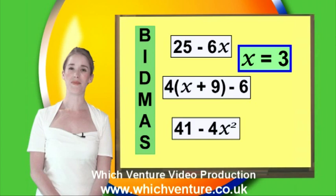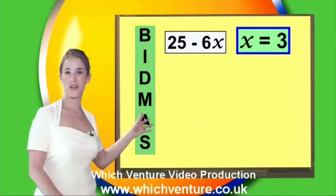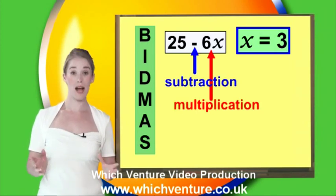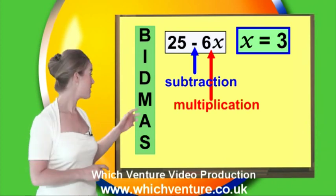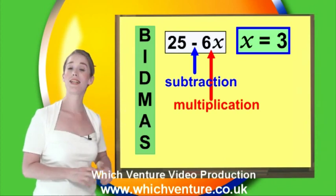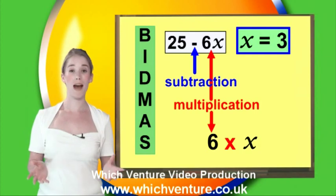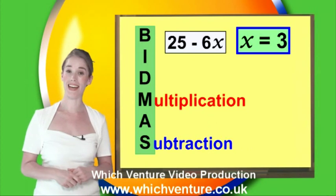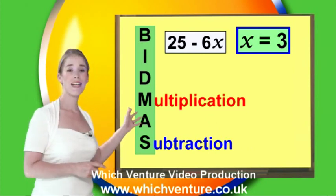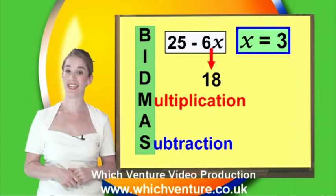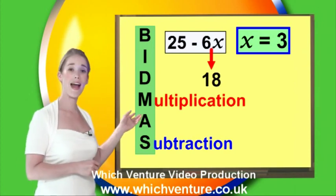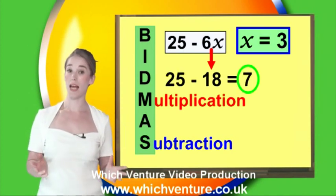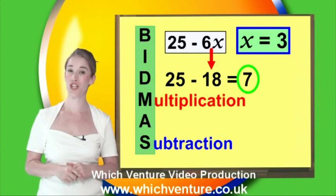Let's now have a look at these together. In this expression we have two operations, subtraction and multiplication. Remember in algebra when two things are written next to each other like 6x, it means they're multiplied together. Thinking about BIDMAS, we know we need to do the multiplication first and then the subtraction. So first, 6 multiplied by 3, which is 18, and then 25 subtract 18, which gives 7. Even though the subtraction sign came before the multiplication in the expression, we didn't do it first.